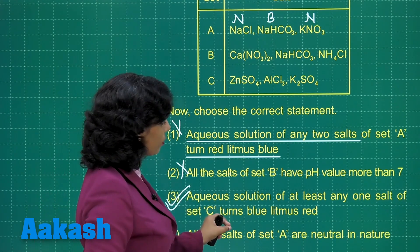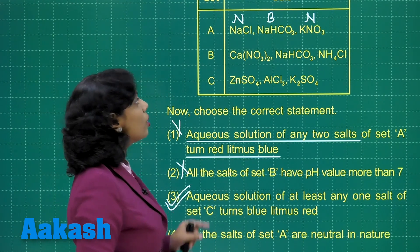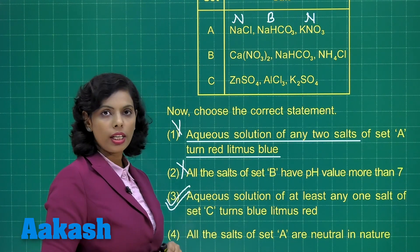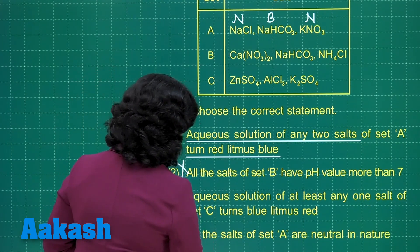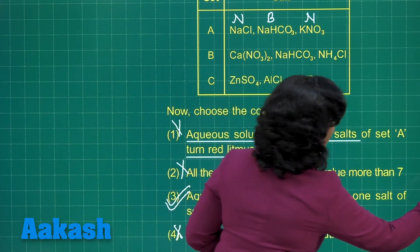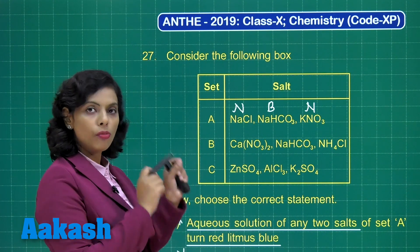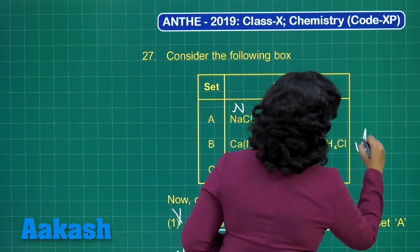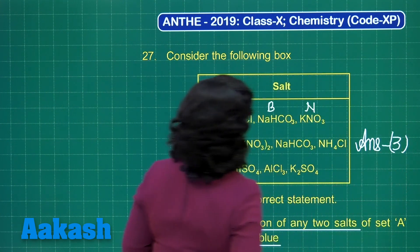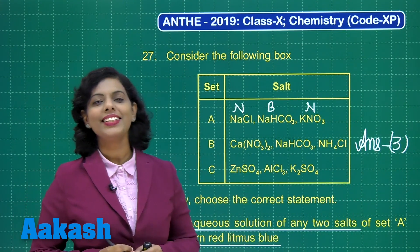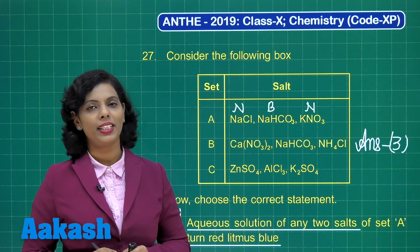Option 4 states: all the salts of set A are neutral in nature. We already identified that this is not the case — sodium hydrogen carbonate is basic in nature, so this is also incorrect. After analyzing all options, the correct answer for this question is option 3. I hope this question is also clear. Now the turn is there for question number 28.